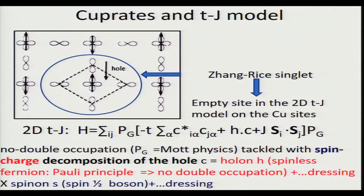This is the model which describes the Mott physics for very low doping. In our approach, the Mott physics is tackled with a spin-charge decomposition of the hole. We write the hole, which describes the Zhang-Rice singlet, in terms of a holon — a spinless fermion — and then by the Pauli principle automatically take into account the no-double-occupation constraint. We need some dressing of this simple spinless fermion. So the holon, which is charged, and the spinon, which is a spin-1/2 boson, plus a dressing.